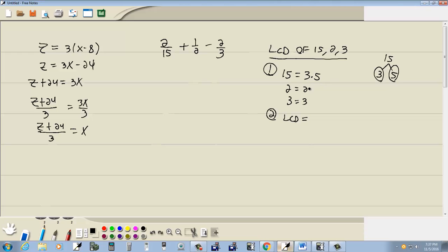So then the LCD. We'll start with the two. We're looking for the greatest number of twos on any single line to the right of the equals. And that would be one of them. Now the threes. We're looking for the greatest number of threes on any single line to the right of the equals. There's one here. None here. One here. So we'd have one. And for the five. We'd have one five. So six times five is thirty.